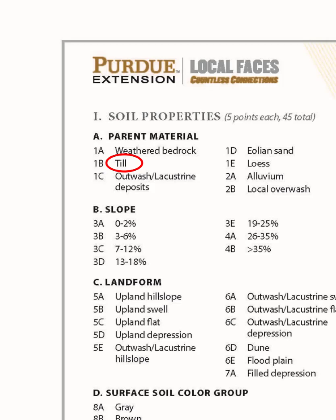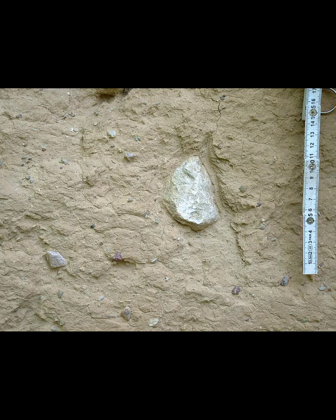Parent Material 1B: Till. The diagnostic zone will be a dense layer of clay, silt, and sand containing scattered rocks and pebbles that have rounded edges. This material was ground up and deposited by glaciers. It is common in the northern two-thirds of the state of Indiana and will contain rocks and pebbles randomly distributed, not in stratified layers.